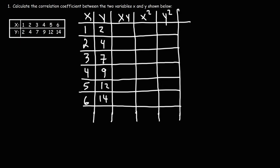Moving on to the next column, we need to multiply x and y. So 1 times 2 is 2; 2 times 4 is 8; 3 times 7 is 21; 4 times 9 is 36; 5 times 12 is 60; and 6 times 14 — 6 times 10 is 60, 6 times 4 is 24, so 60 plus 24 gives us 84.